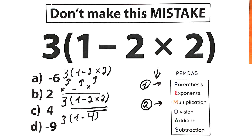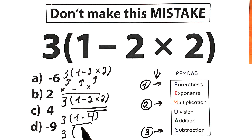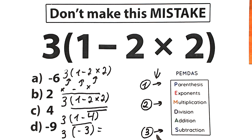Our third step is subtraction, because the subtraction sign is inside the parentheses. So we have 3 times, in parentheses, 1 minus 4, which equals negative 3. That brings us to our last step — multiplication: 3 times negative 3, which equals negative 9.